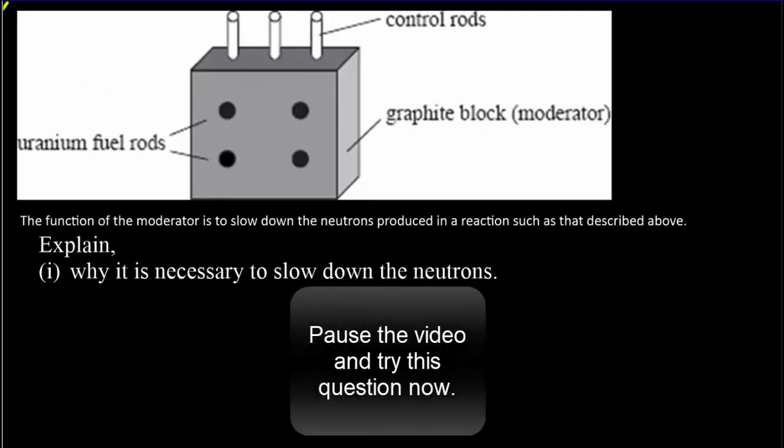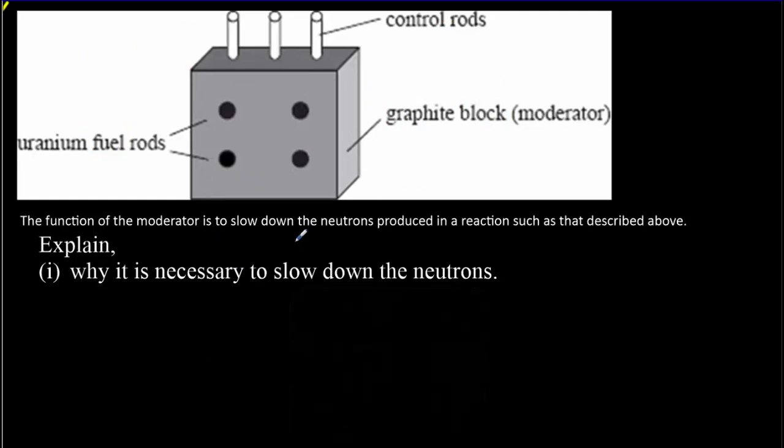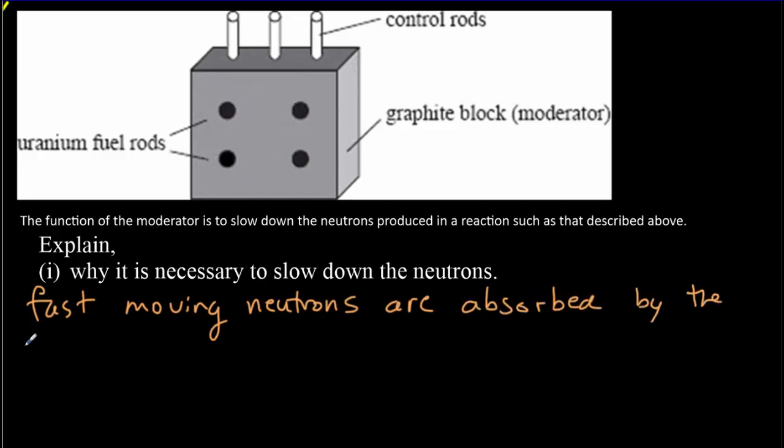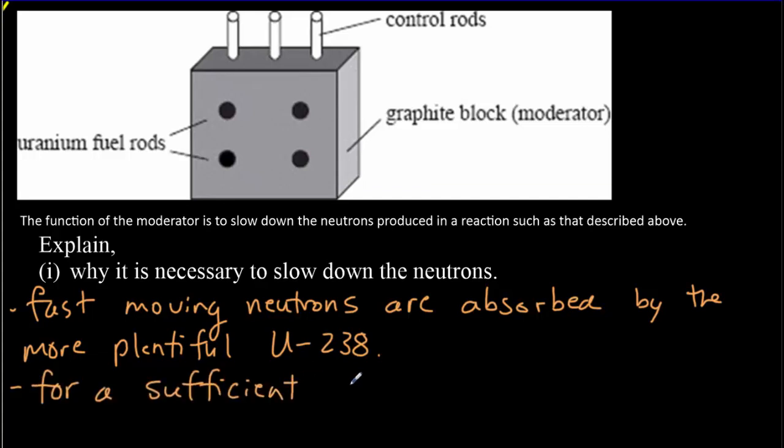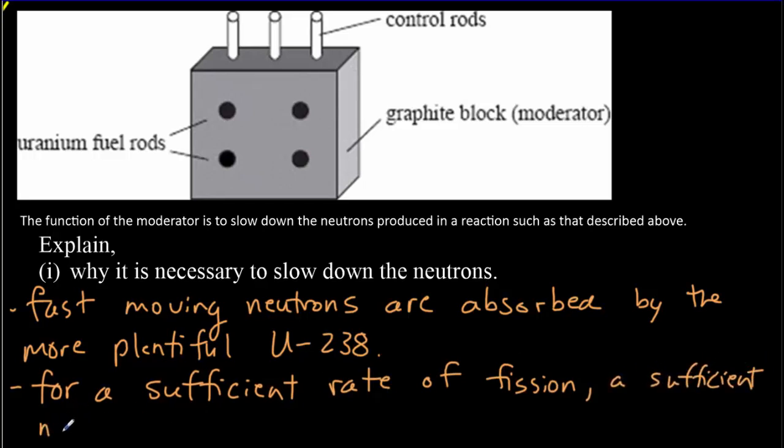Here's another IB question. Pause the video. Read it over. Try it out for yourself. Come back for the answer. So we're given that the moderator is used to slow down the neutrons. Why is it we need to slow down the neutrons? Well, it's because fast-moving neutrons are absorbed by the more plentiful uranium-238. So if we want our rate of reaction to be fast enough for a sufficient rate of fission, a sufficient number of neutrons are needed to fission the uranium-235.